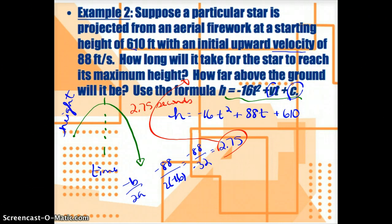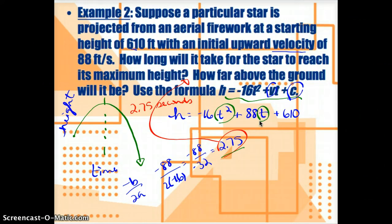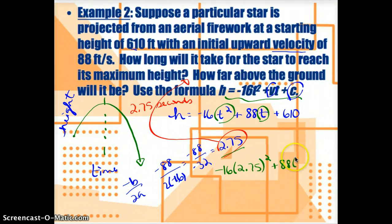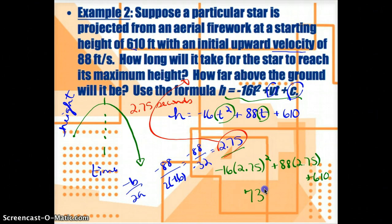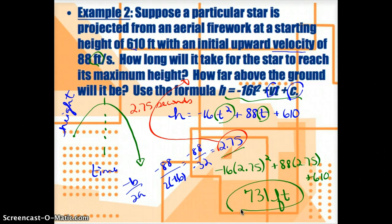To find what that maximum height is, I take the time value of 2.75 seconds and plug it in for t: negative 16 times 2.75 squared plus 88 times 2.75 plus 610. That gives a value of 731. Since we're measuring in feet, the firework star reaches a maximum height of 731 feet. So the vertex is at the point 2.75, 731.